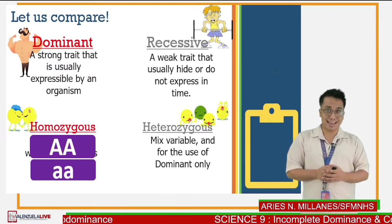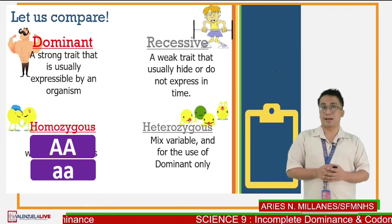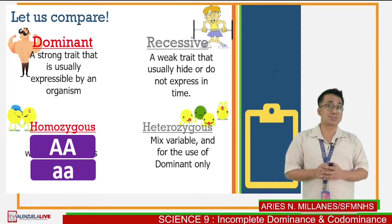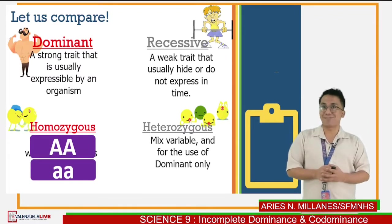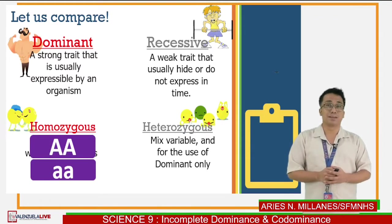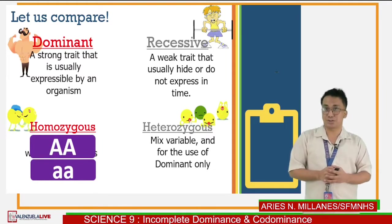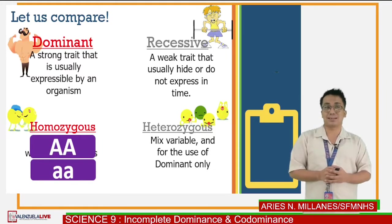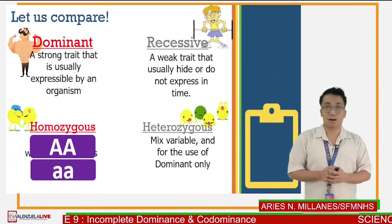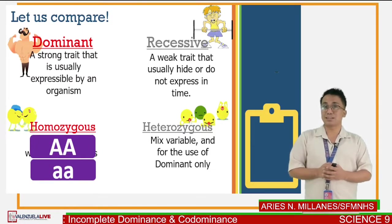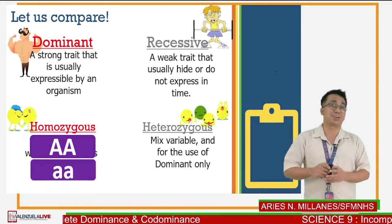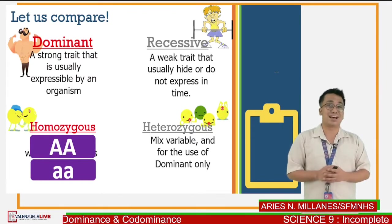Heterozygous, on the other hand, is a combination of a capital letter and a small letter. We need to write the capital letter first, followed by the small letter, because the dominant feature should be emphasized. It is used for describing a dominant trait only.